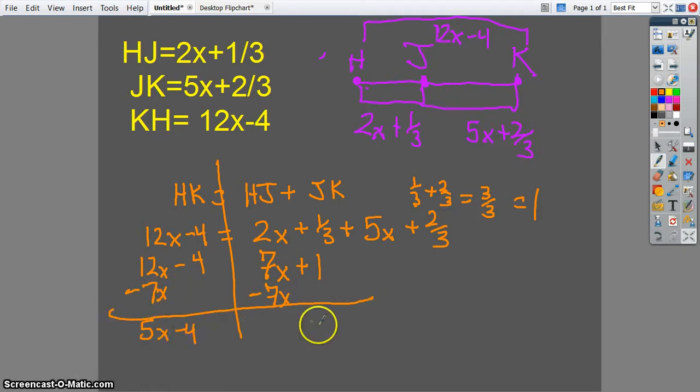5x minus 4. I've got my 1. I'm going to add 4 to both sides. And you end up with 5x equals 5. You're going to divide both sides by 5, of course.